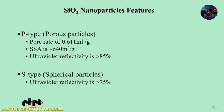Nanosilica particles are divided into p-type or porous particles and s-type or spherical particles according to their structure. The p-type silicon nanoparticles are characterized by numerous nanopores, which have a pore rate of 0.61 milliliter per gram and exhibit a higher ultraviolet reflectivity compared to the s-type. UV reflectivity of p-type is more than 85%, and UV reflectivity of s-type is more than 75%.